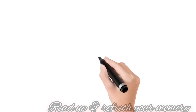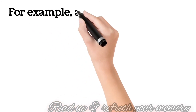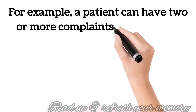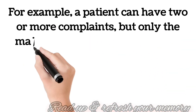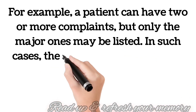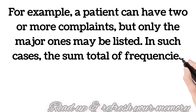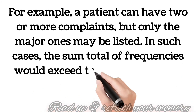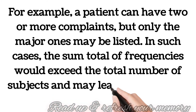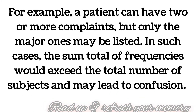For example, a patient can have two or more complaints, but only the major ones may be listed. In such cases, the sum total of frequency would exceed the number of subjects, leading to confusion. So, the total number of subjects in cases of multiple response is given as a base, and from that the percentage can be calculated.